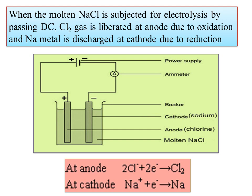The anode accepts electrons — chlorine gas is liberated due to oxidation. At the cathode, sodium metal is discharged; it releases electrons and is reduced. So there is one reaction at the anode and one at the cathode.